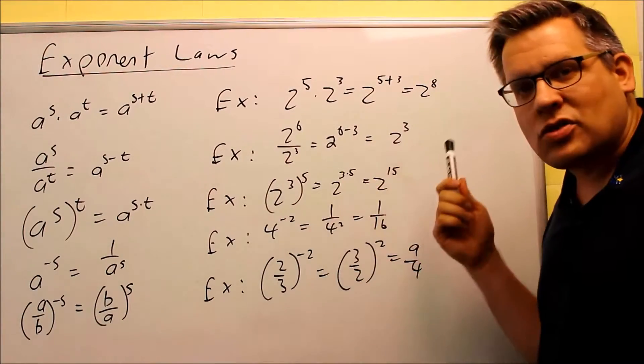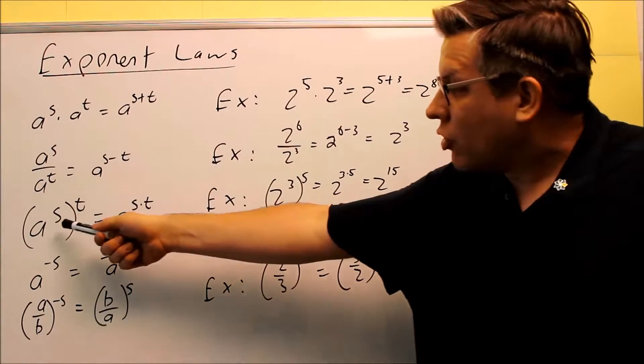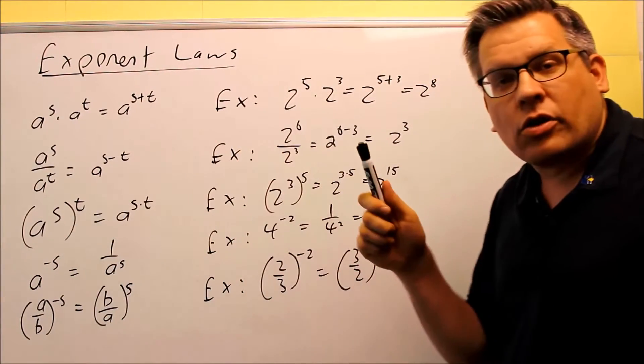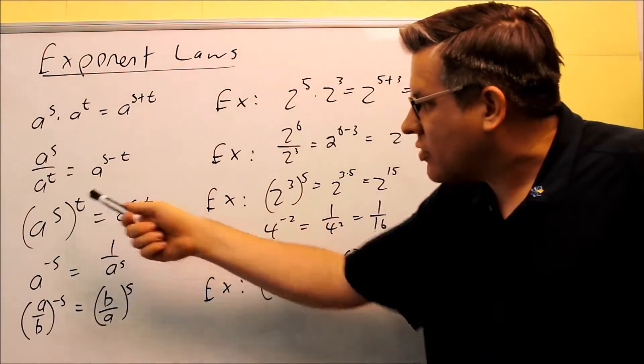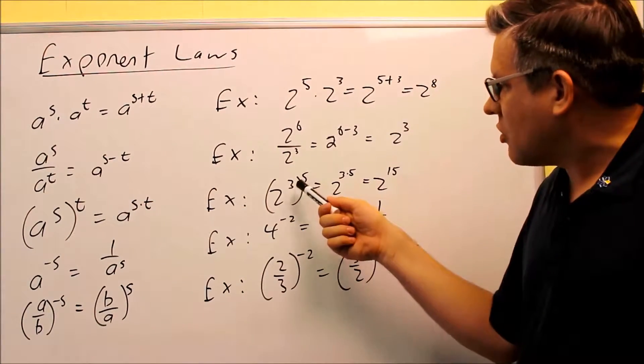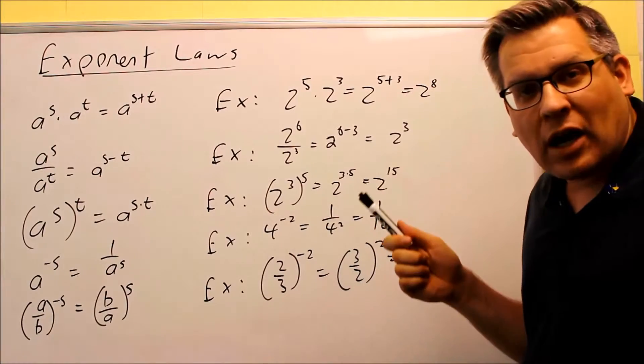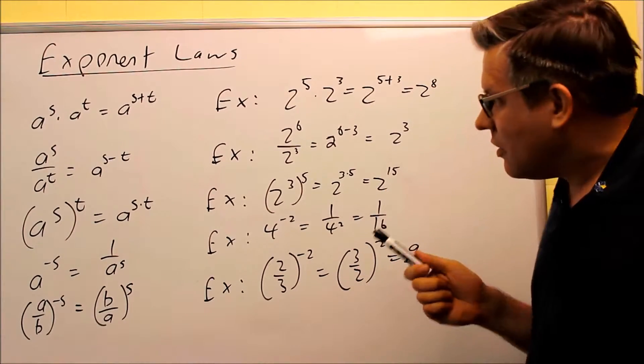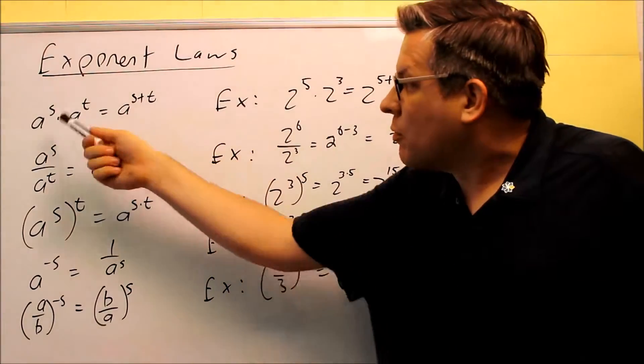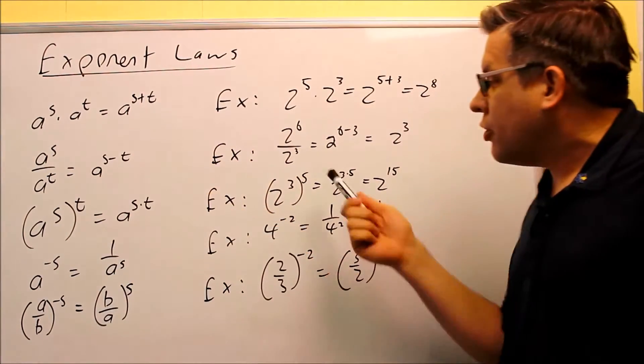Okay, so you need equal bases in order to do these. For the third one here, you're raising a power to another power. When you do that, you're multiplying the exponents together. So s raised to t, you multiply those. So this one here, 3 to the 5th power is 15. You're multiplying them, not adding. You're adding when you have two separate bases. This one power to another power, you're doing multiplication.